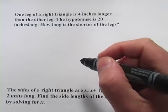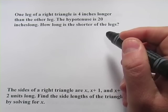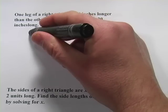It says one leg of a right triangle is 4 inches longer than the other leg, the hypotenuse is 20 inches long. So let's just make a little sketch of that.